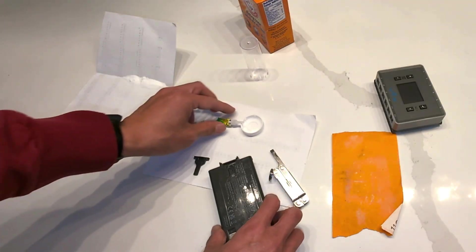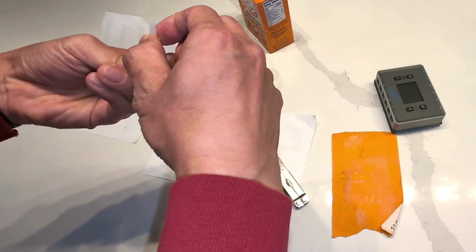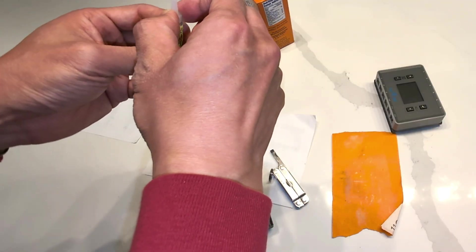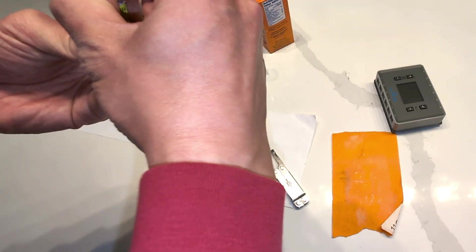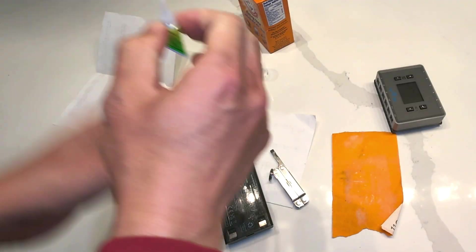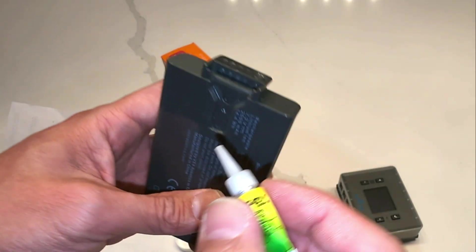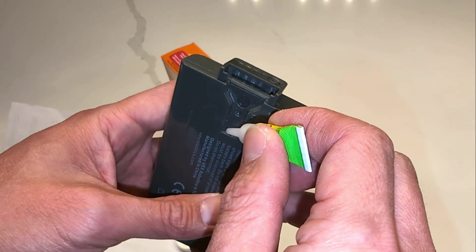So first thing we do is get the crazy glue here. Just make sure you don't want to get it on your finger, so be careful with that. This one, I think you just twist this and it opens the seal. And next what we're going to do is right on this area here where it broke off, I'll put a bunch of glue in that area.